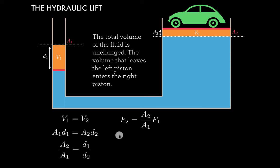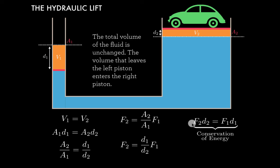Substituting this expression for A2 over A1, we get F2 equals d1 over d2 times F1. Rearranging once more, we end up with F2 times d2 equals F1 times d1. On the left we have a large force times a small distance, and on the right a small force times a large distance. Force times distance has units of energy — joules — so this is essentially a statement of conservation of energy.